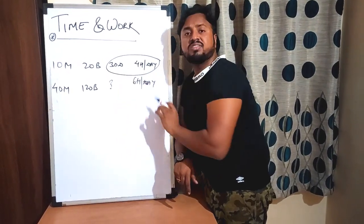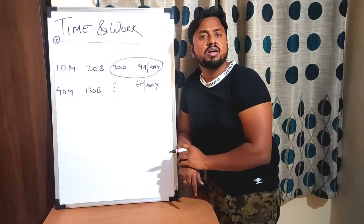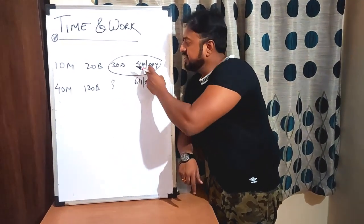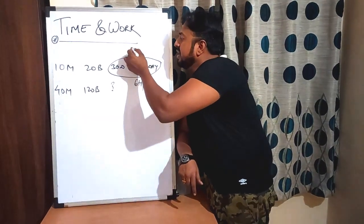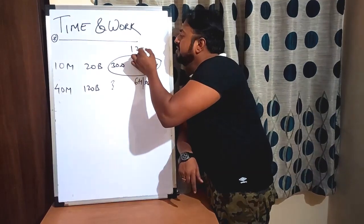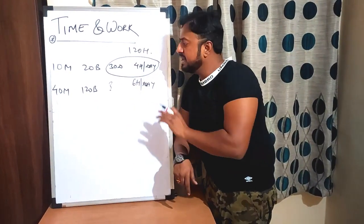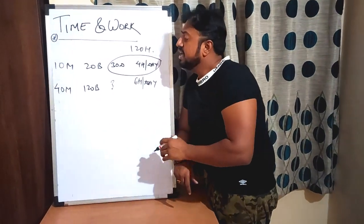So how many total hours are being worked? 30 days × 4 hours every day = 120 hours. So the people have worked for a total of 120 hours.